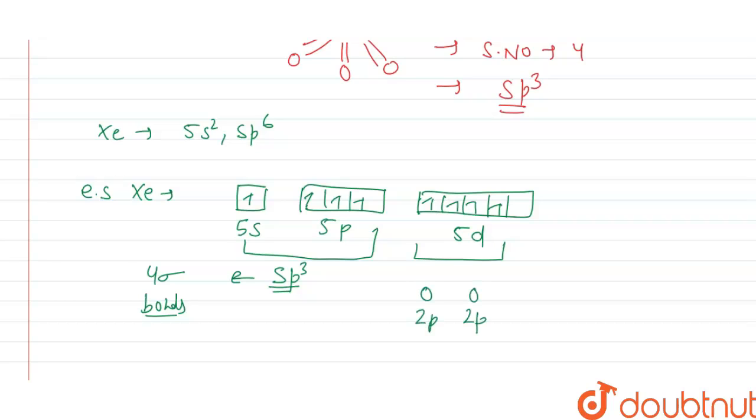The remaining four d orbitals are used to make pi bonds with oxygen 2p orbitals. There are 4 oxygen atoms with their 2p orbitals that overlap with the d orbitals of xenon to form pi bonds.